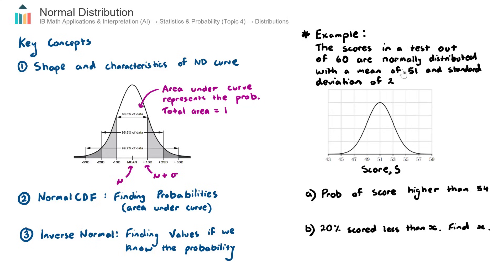Okay, let's go across to this example here on the right-hand side. And as we work through this example, we'll cover key concepts two and three. This example reads, the scores in a test out of 60, so we have some sort of test, could be mathematics, could be science, could be business, but it's a test out of 60. But the scores are normally distributed with a mean, or in other words, an average score of 51, and a standard deviation of two.